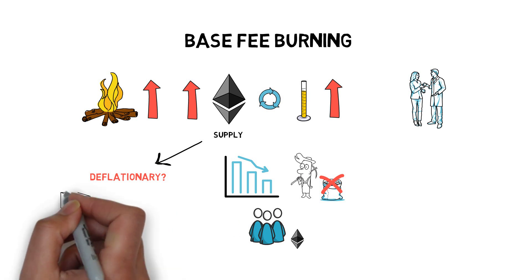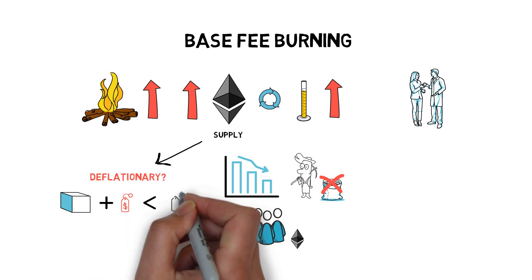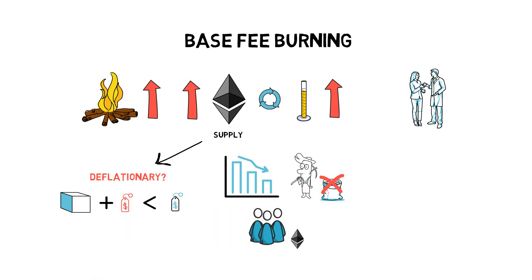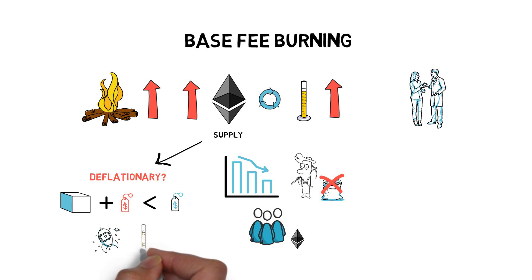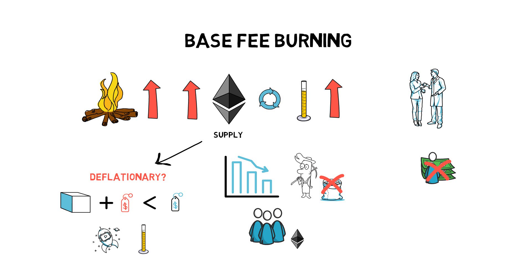The fee burning mechanism also sparked discussions about ETH becoming deflationary. This would be possible if the block reward plus miner tip is lower than the base fee burned — which would have been the case during the recent DeFi gas fee craze when the network was constantly under heavy utilization. One potential drawback of burning the base fee is losing control over the long-term monetary policy of ETH. With this change, ETH would end up being sometimes inflationary and sometimes deflationary, though the max inflation would be capped at around 0.5 to 2% per year.